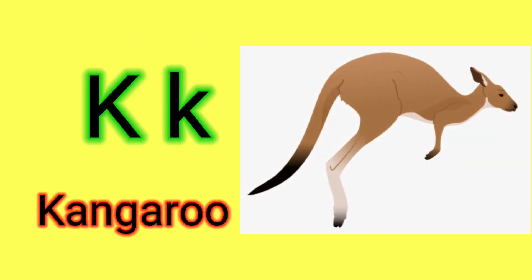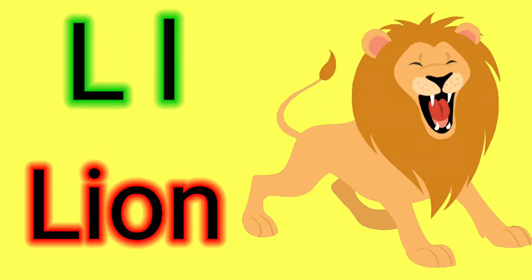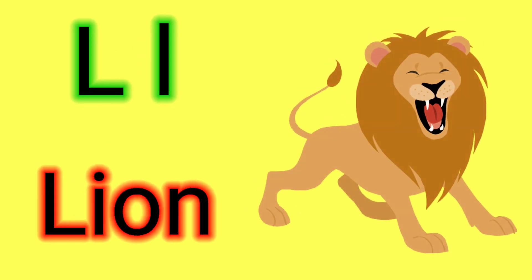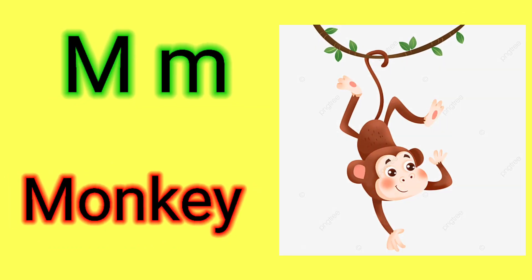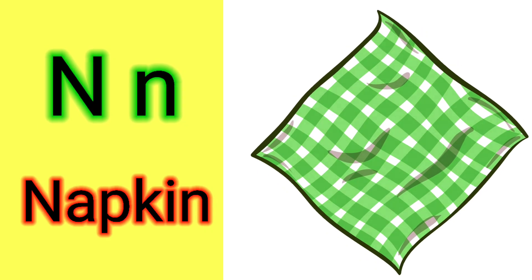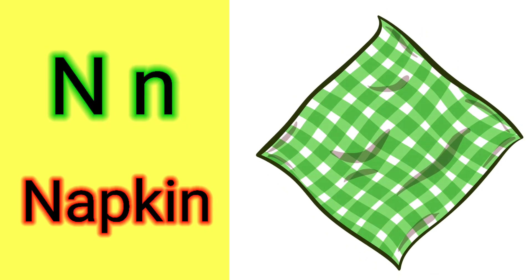K for kangaroo, L for lion, M for monkey, N for napkin, O for orange.